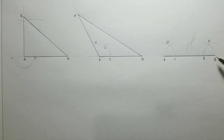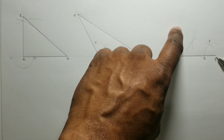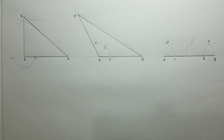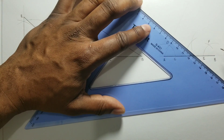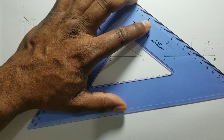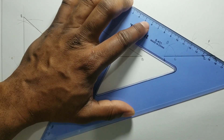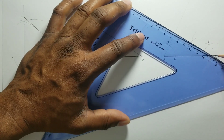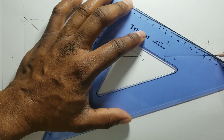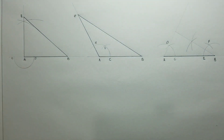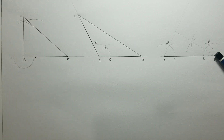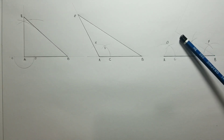I will now draw a line from B to touch this first line, which will give me point G. Always remember to outline your required triangle. This triangle is now an acute triangle — all angles are less than 90 degrees.